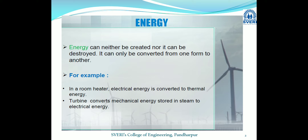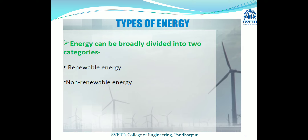For example, in a room heater, electrical energy can be converted into thermal energy. A second example: a turbine converts mechanical energy stored in steam into electrical energy. This is how energy can be converted from one form into another.